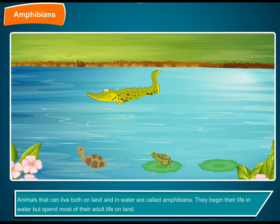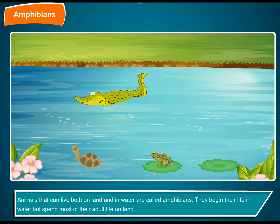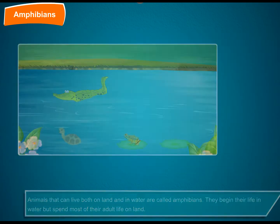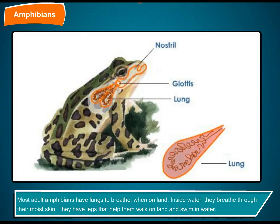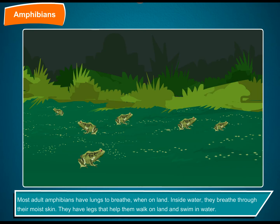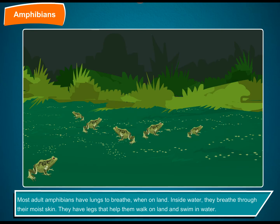Amphibians — animals that can live both on land and in water are called amphibians. They begin their life in water but spend most of their adult life on land. Most adult amphibians have lungs to breathe when on land, and inside water they breathe through their moist skin.